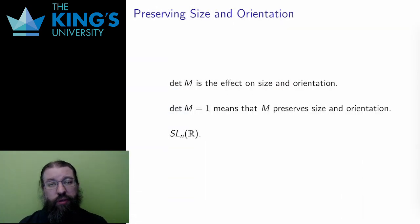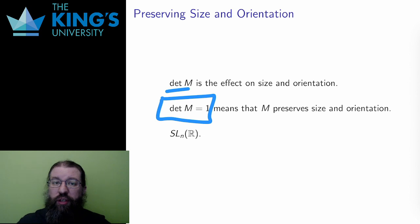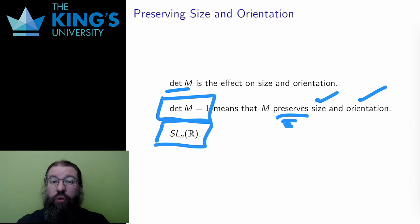Now I have determinants. The determinant is the effect on size and orientation. However, if the determinant is 1, that means that size and orientation do not change. Matrices with determinant 1 preserve size and orientation exactly. There is also a notation for this, SL_n(R). This is called the special linear group, the matrices of determinant 1, those that leave both size and orientation unchanged.